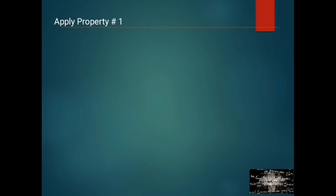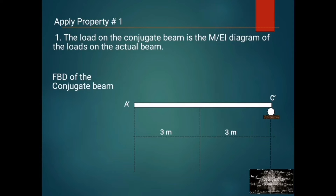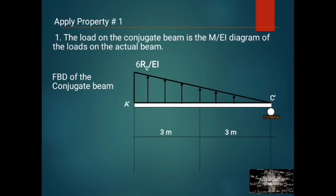Applying property number 1 — the load on the conjugate beam is the M over EI diagram of the loads on the actual beam — for the FBD of the conjugate beam, the moment by parts from the actual beam becomes the load on the conjugate beam. So we have 6RC over EI, then negative 60 over EI.